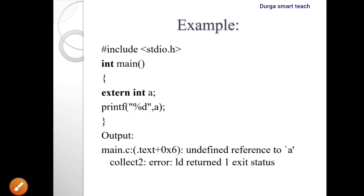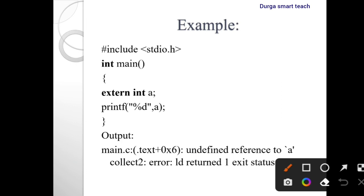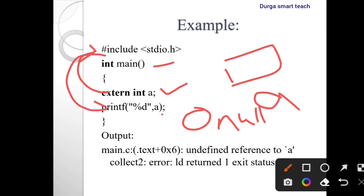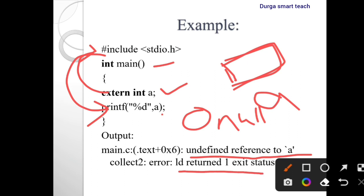In the example, '#include stdio.h' with 'int main' and 'extern int a' — whenever you declare it, memory is allocated for this variable. If we printf the value of a and it is not initialized, it will print an error. If you declare the extern variable above the main function, it will display either 0 or null. But if declared within the main function without initialization, it will print an error: 'undefined reference to a', with exit status 1.